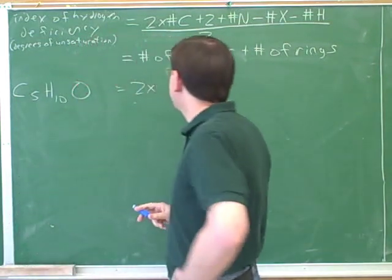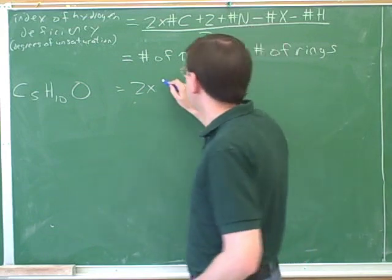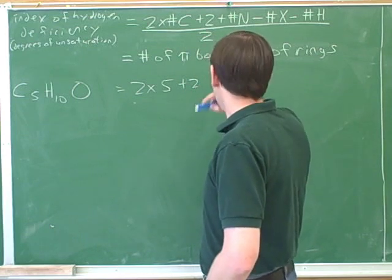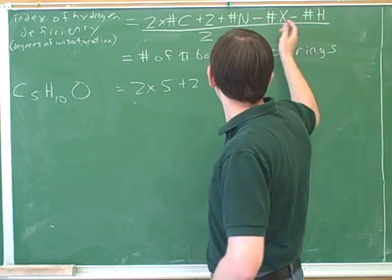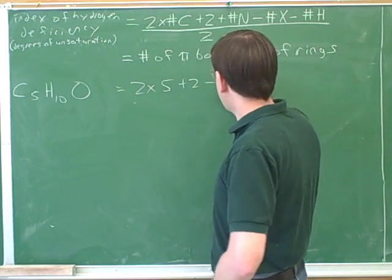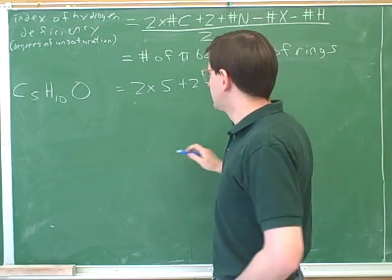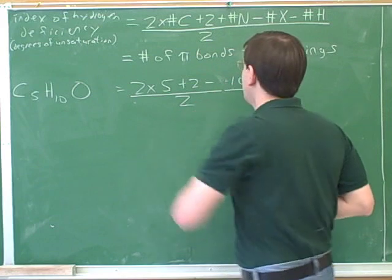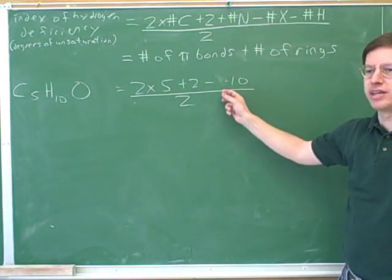Well, that would be 2 times the number of carbons, while the number of carbons here was 5, plus the number 2. The number of nitrogens here was 0. The number of halogens was 0, but we have to subtract the number of hydrogens, which was 10. Plugging into this formula, we would get this.